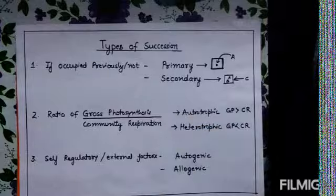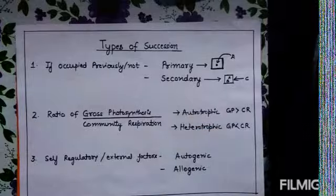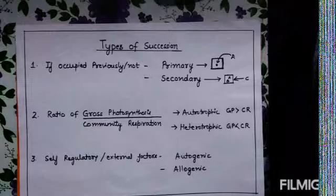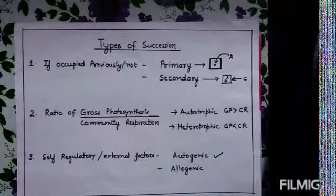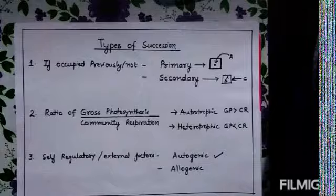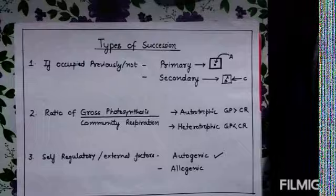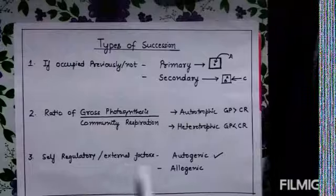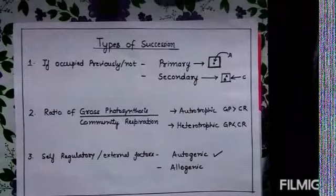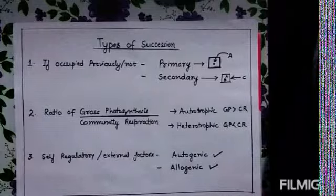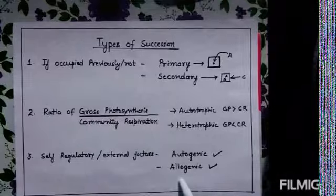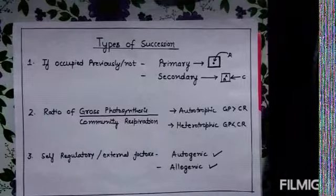The third classification is based on self-regulatory or external factors. If the succession is regulated by the organism itself, it is known as autogenic succession — this kind of succession is self-regulatory and the whole process is due to the organism's own activities. When succession is promoted by external forces like flood or drought, this kind of succession is termed allogenic succession.